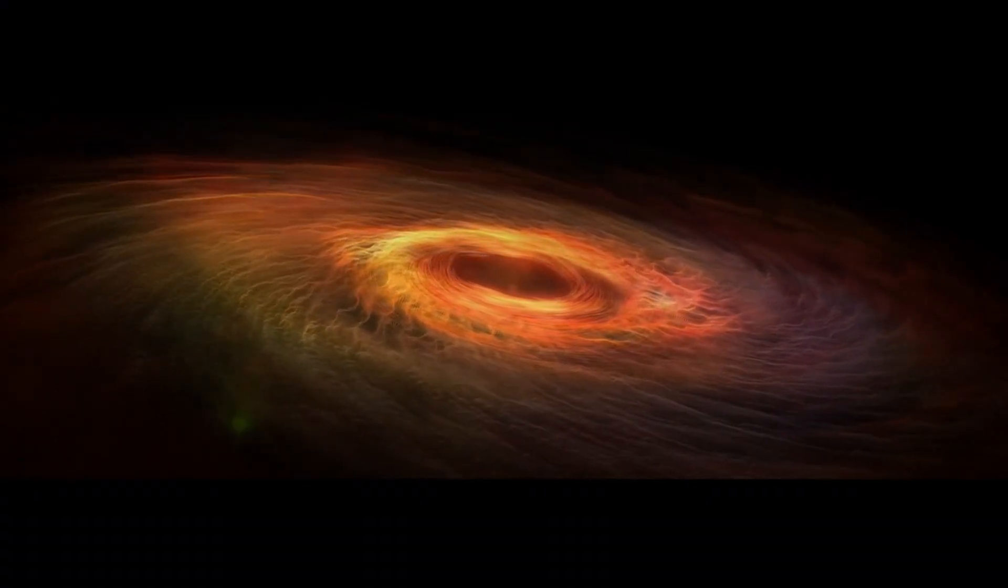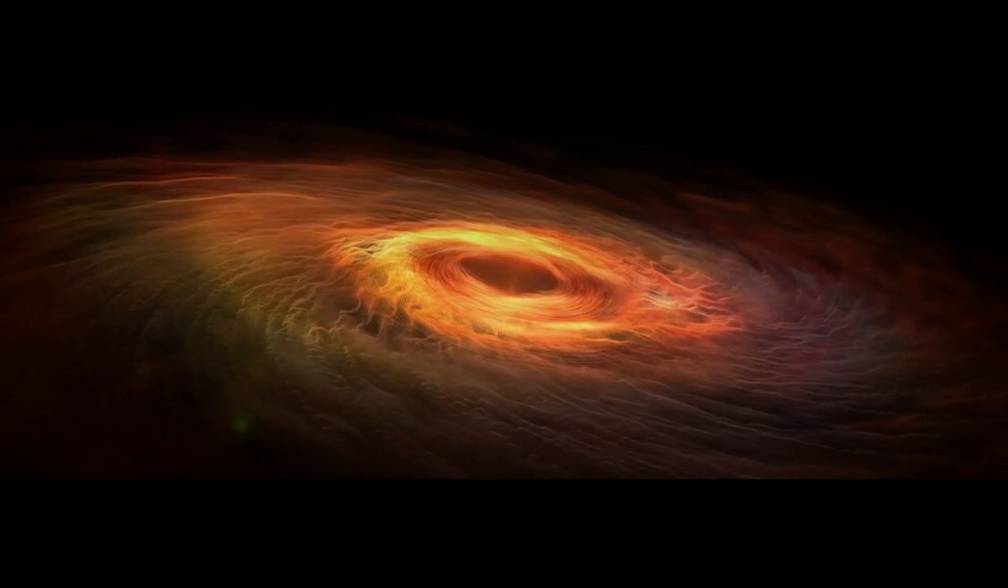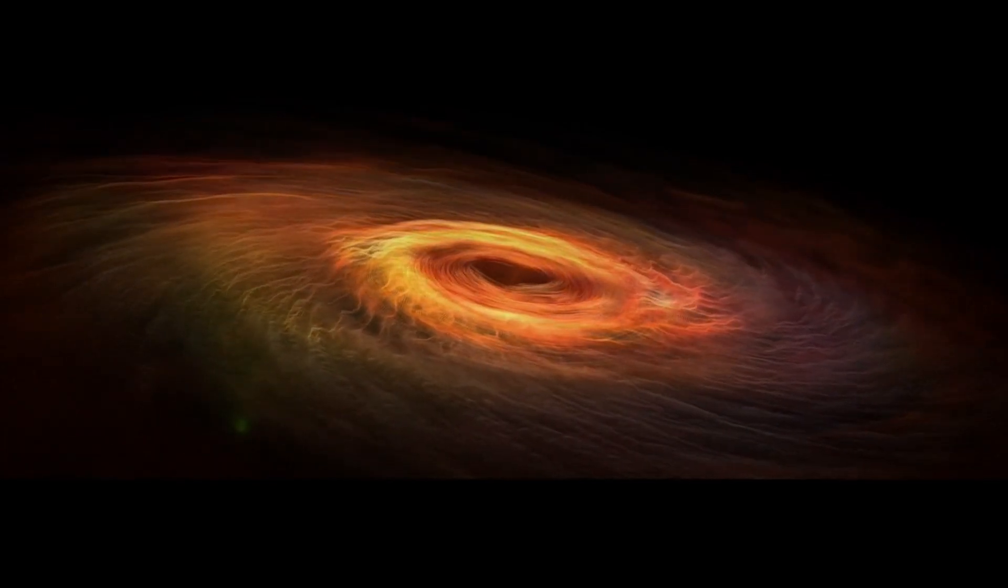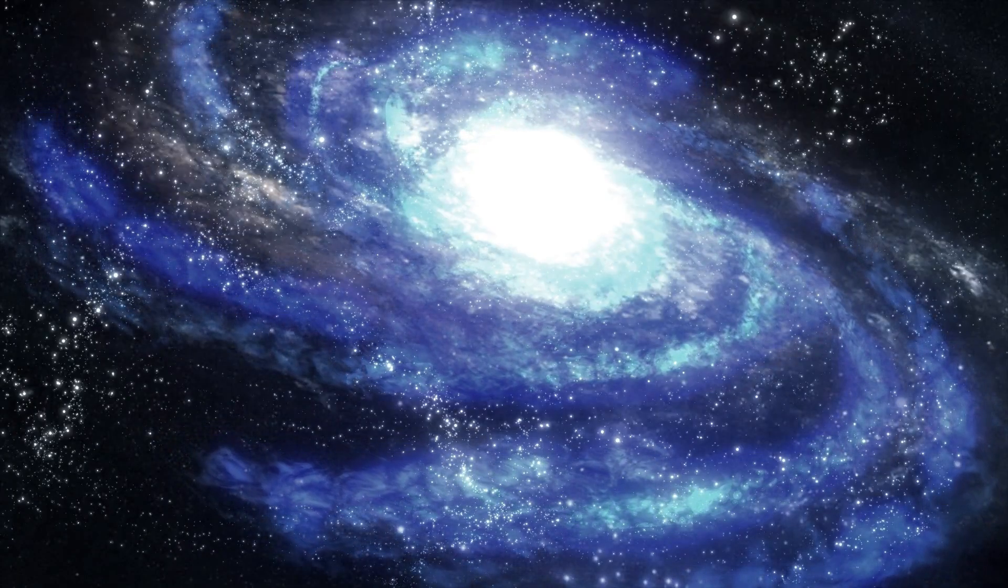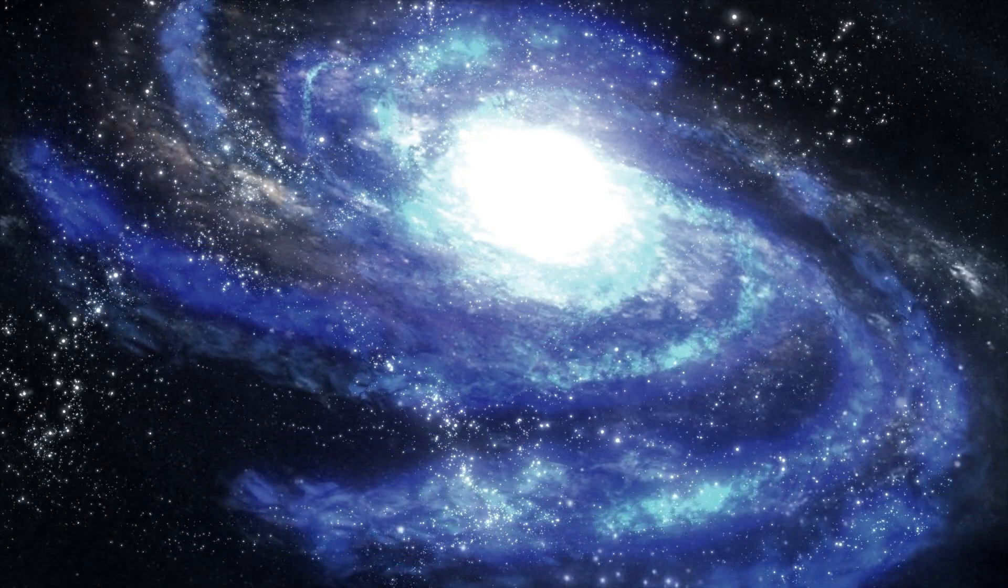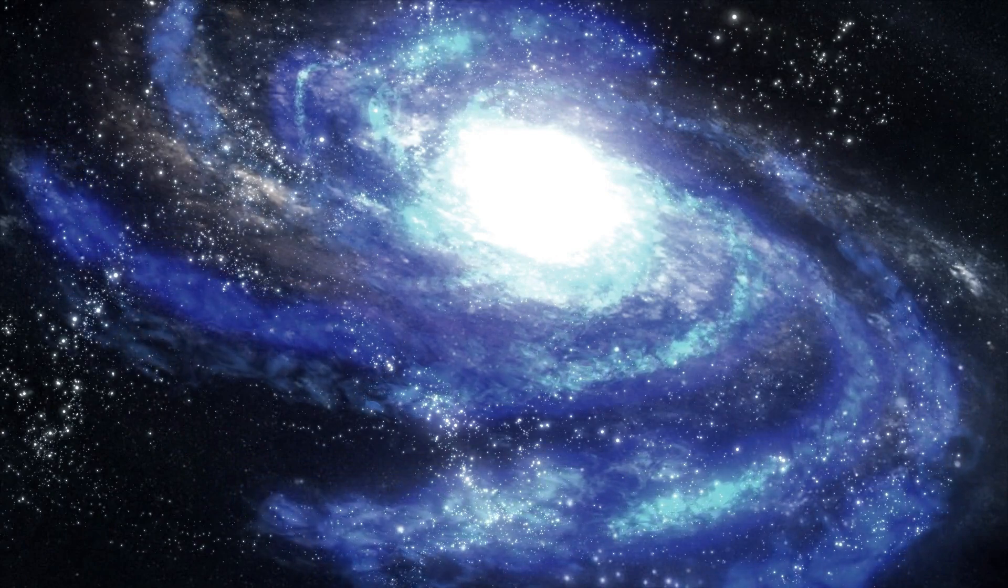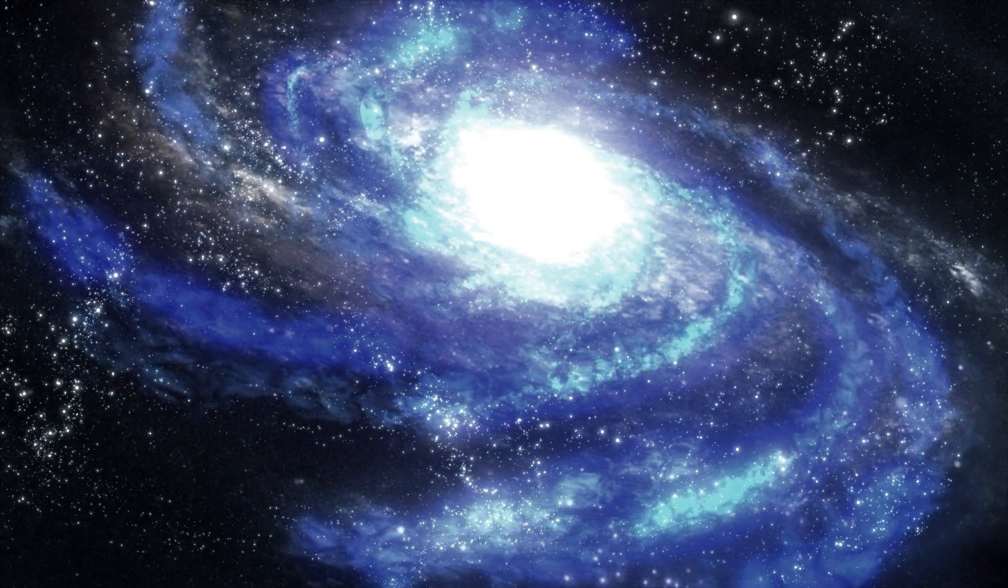Betelgeuse belongs to the red supergiant category, one of the largest and most massive types of stars in the universe. It is located in the constellation Orion, which is easily recognizable in the night sky due to its distinctive arrangement of stars. At a distance of roughly 642 light years from Earth, Betelgeuse is far enough away to pose no immediate threat to our planet, but close enough to be a focal point of astronomical research.